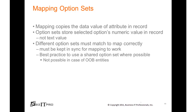Mapping option sets: it's important to understand that mapping copies the data value of an attribute from the record. Option sets store the selected option's numeric value in the record, not the text value. So if you're using different option sets between entities, these numeric values must match to map correctly — they must be kept in sync. It's a best practice to use a shared option set where possible, though this is not possible for out-of-box entities where option sets are replicated across lead, account, and contact.